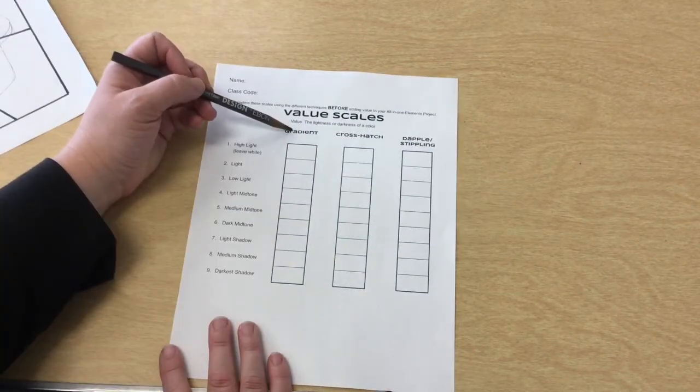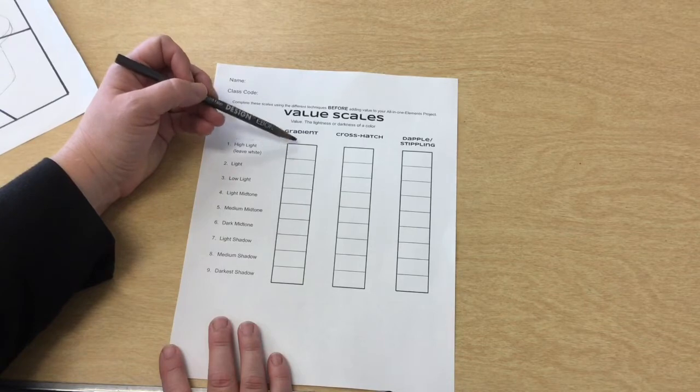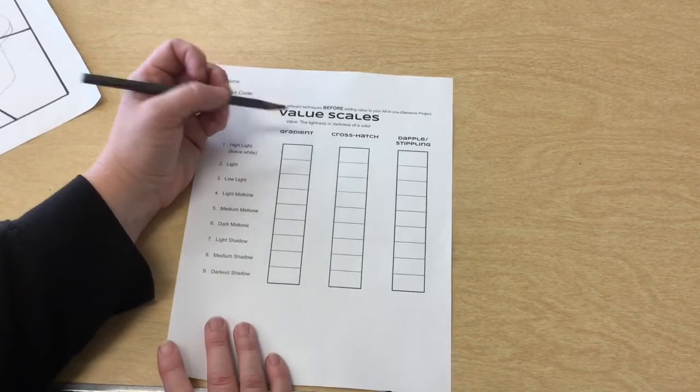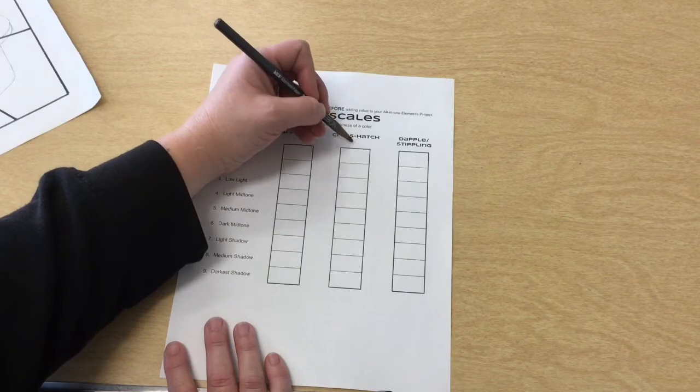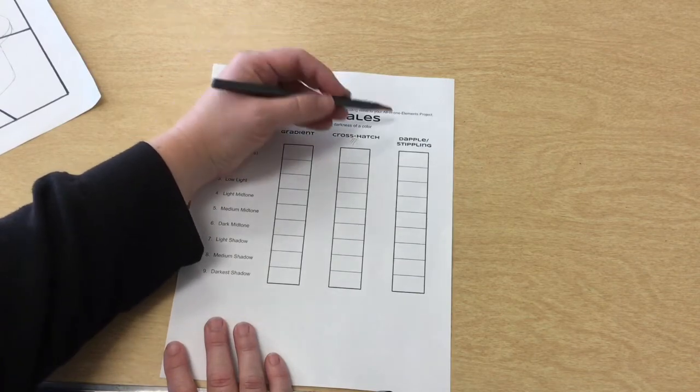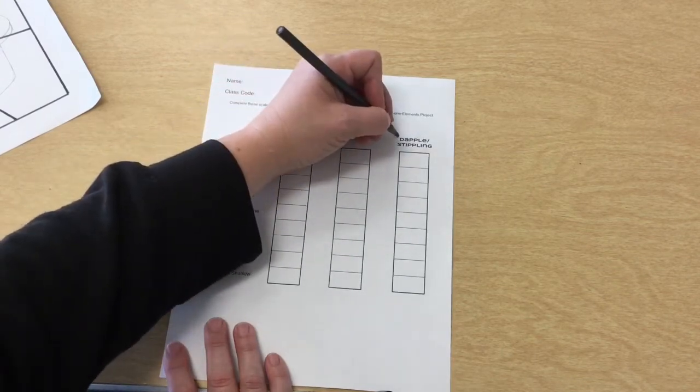There's three different options. You have the gradient where you are just working to be very smooth, cross hatching where you are using actual lines that you cross, and then dappling or stippling is where you do dots.